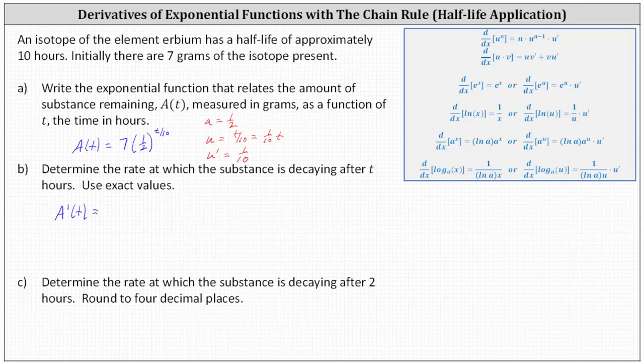A prime of t is equal to seven times the derivative of 1 half to the power of t divided by 10 with respect to t, which is natural log A, which is natural log of 1 half, times A to the power of U, which is 1 half to the power of t divided by 10, and then times U prime, where U prime is 1 10th. Let's write the derivative function as A prime of t equals 7 10ths natural log 1 half times 1 half raised to the power of t divided by 10.